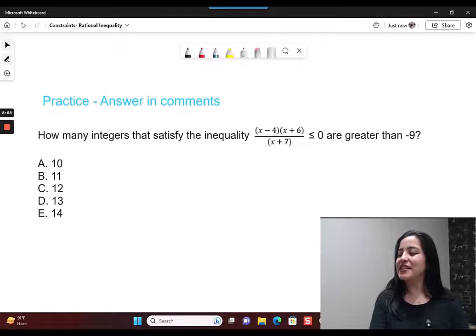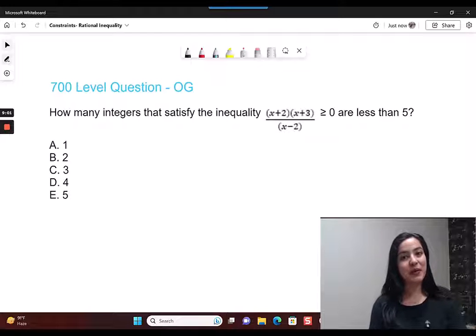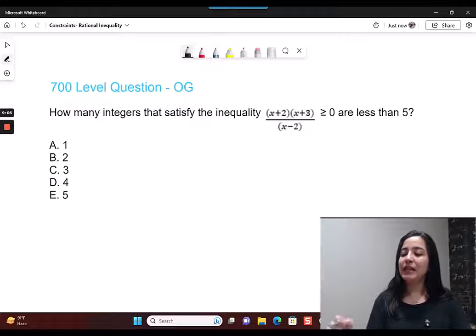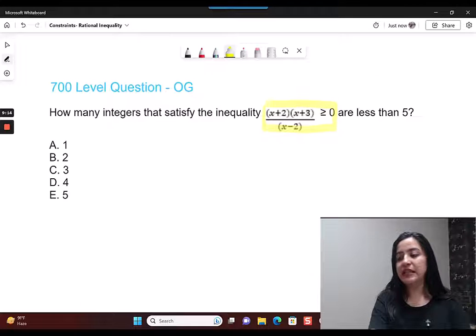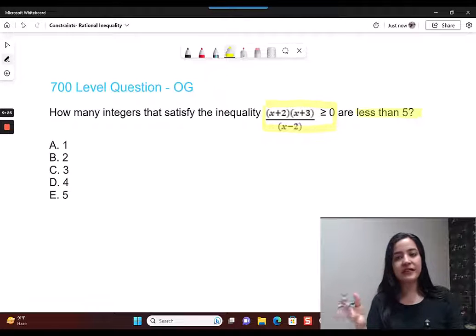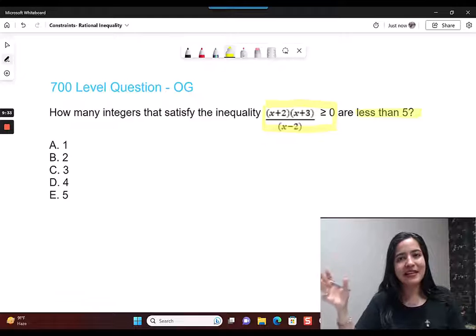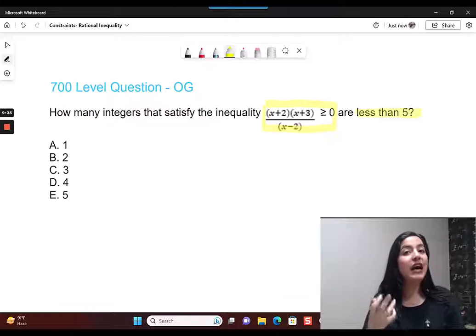For now, let's get into the discussion mode and this is the question we talked about. So, let's solve this together. What do I have? How many integers, read the question carefully, how many integers that satisfy the inequality this? So, there is an inequality. How many integers that satisfy this inequality are less than 5? So first of all, I want the integers that satisfy this inequality. Then I just need to see how many of those integers are less than 5.